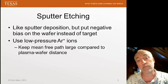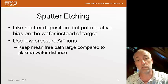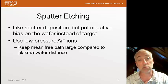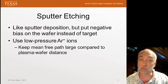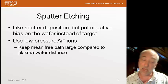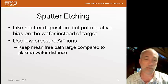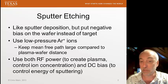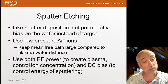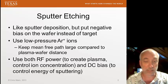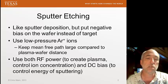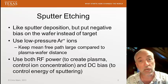Our goal is to keep the mean free path large compared to the distance the argon ions have to travel. In that way, there are few collisions and the argon ions move in a straight line, accelerated by the voltage difference between the plasma and the wafer, causing sputter etching. We use two kinds of power: RF power to create the plasma and strip off electrons which collide to create the ionic species. By adjusting the RF power, we control the concentration of the ions.